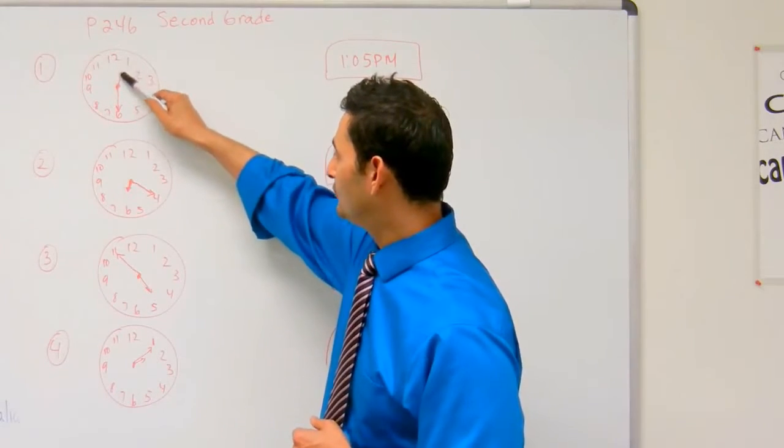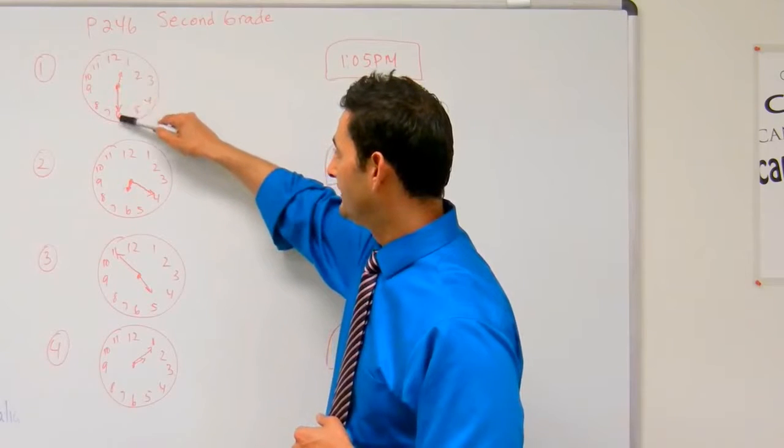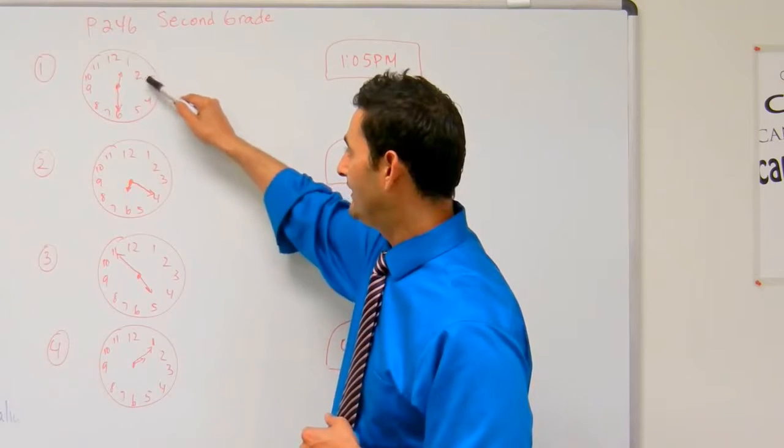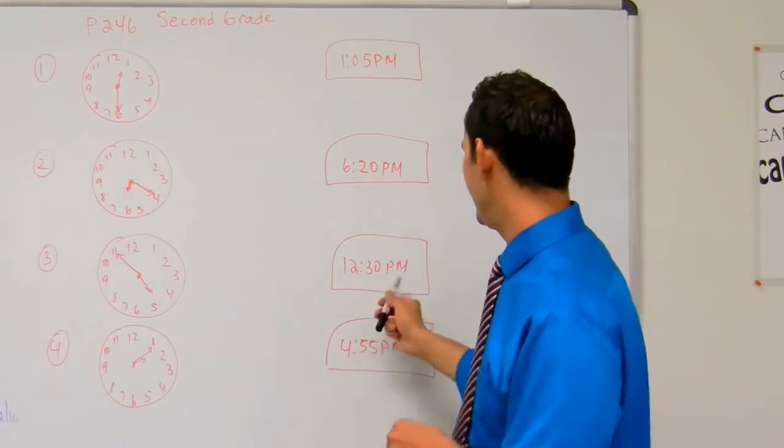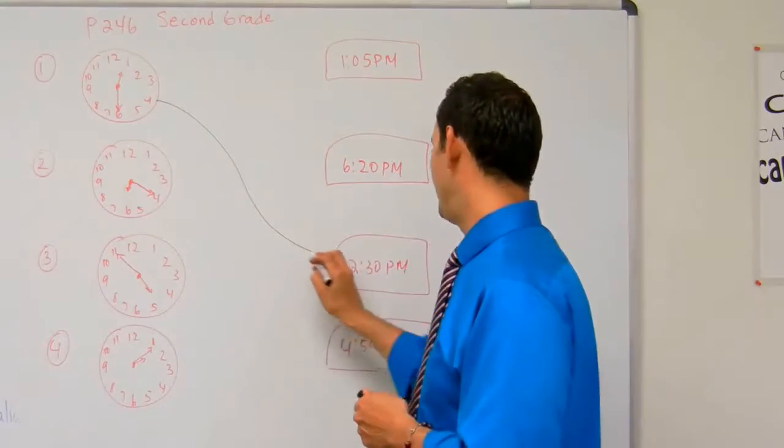So this time says it's past the 12, the hour hand. The minute hand is at 5, 10, 15, 20, 25, 30. So that's 12:30. I've got to find 12:30 there. There it is. I'm going to go ahead and match it there.